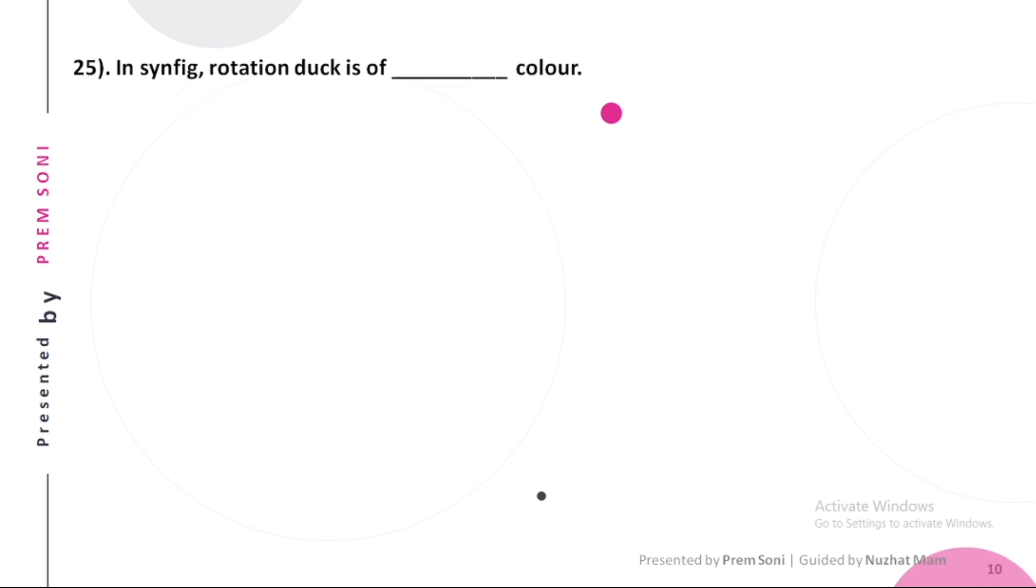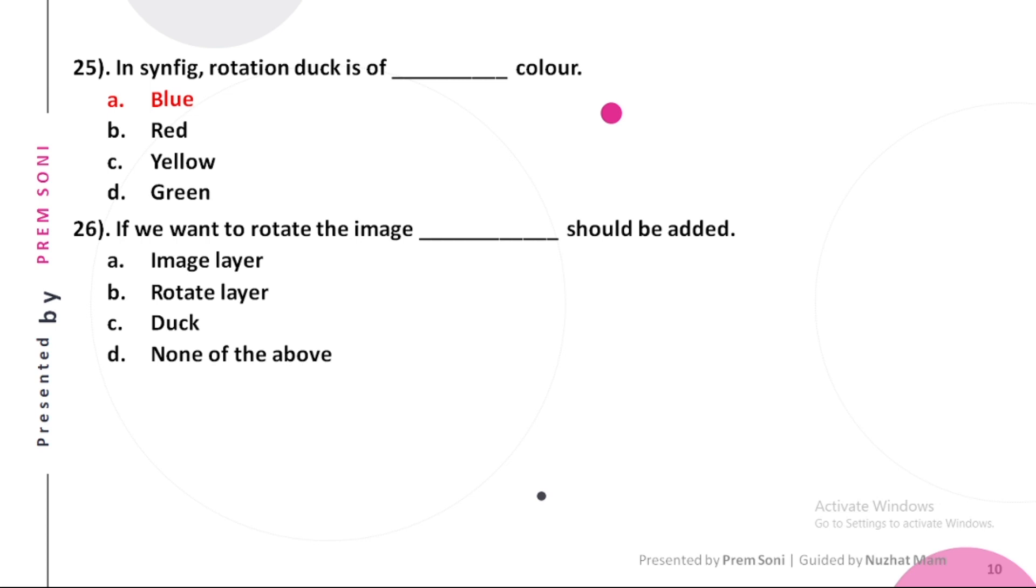Twenty-fifth, in Synfig, rotation duck is of dash color. Options are: a. Blue, b. Red, c. Yellow, d. Green. The answer is Blue. Twenty-sixth, if we want to rotate the image, dash should be added. Options are: a. Image layer, b. Rotate layer, c. Duck, d. None of the above. The answer is Rotate layer.